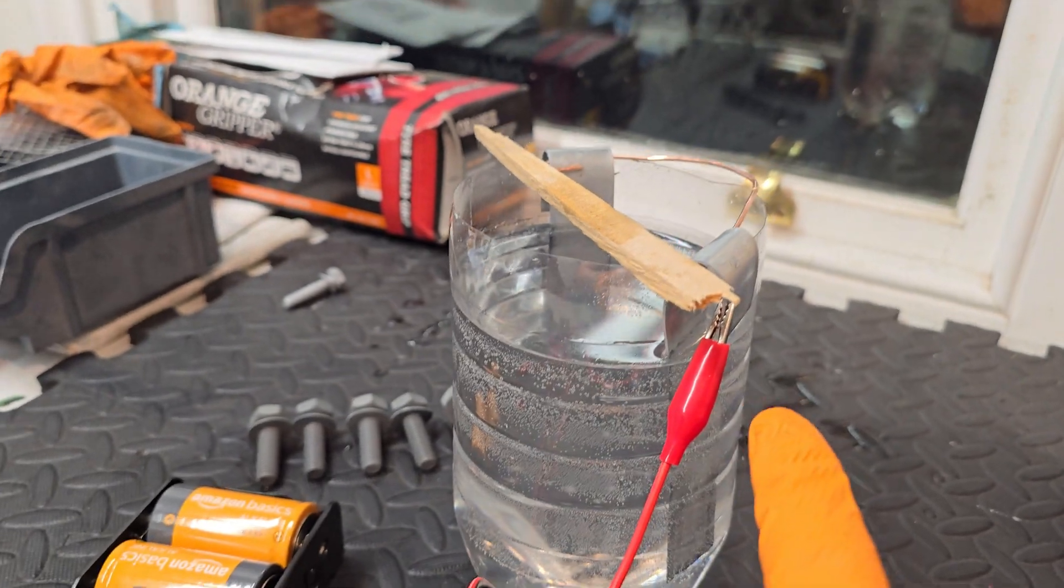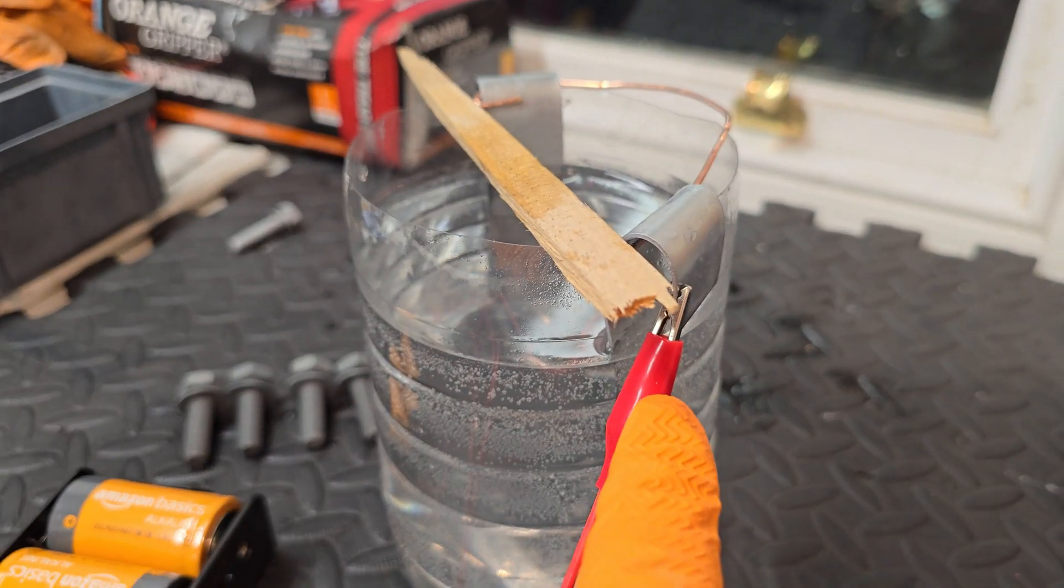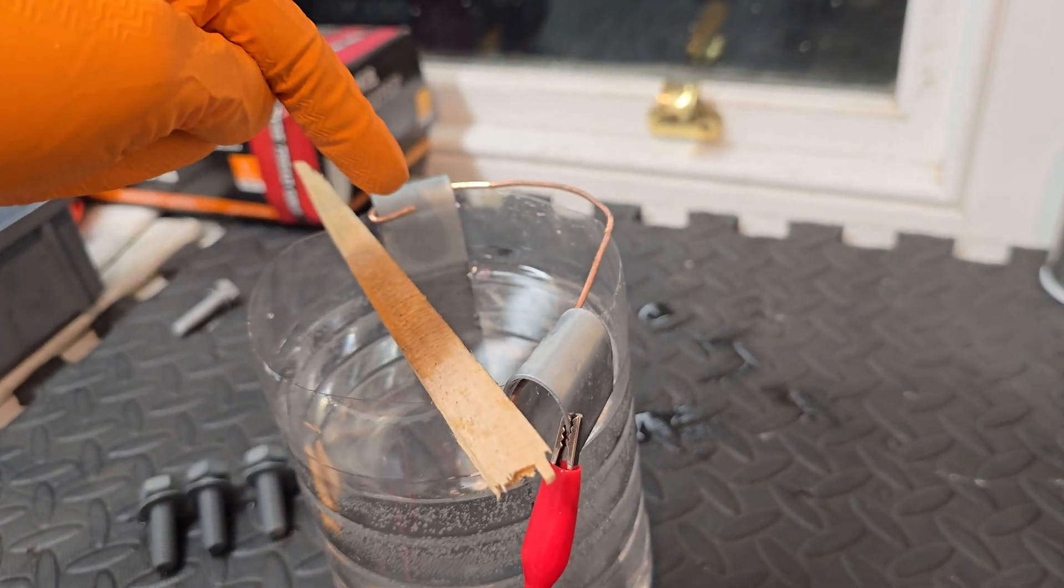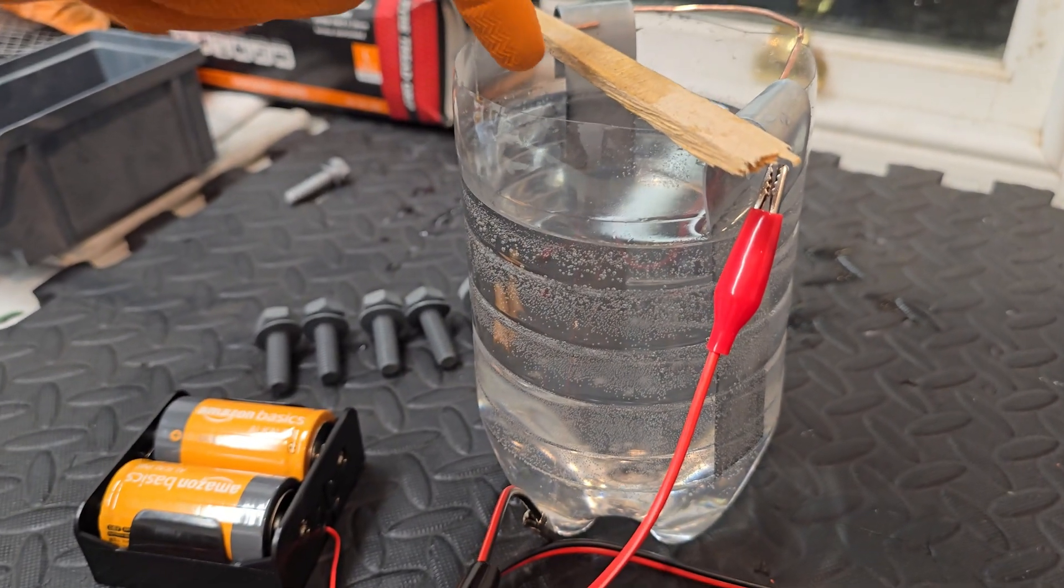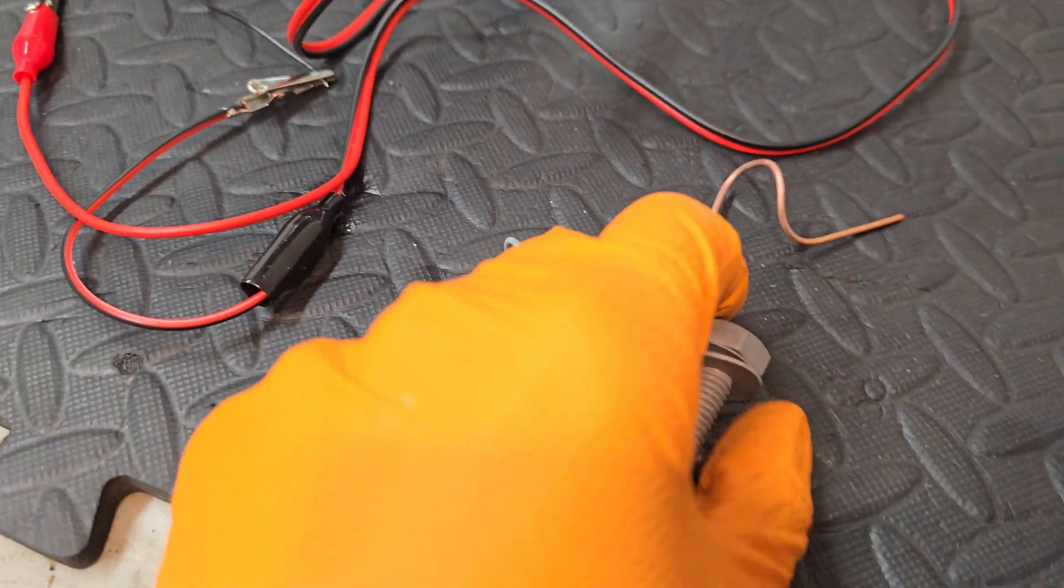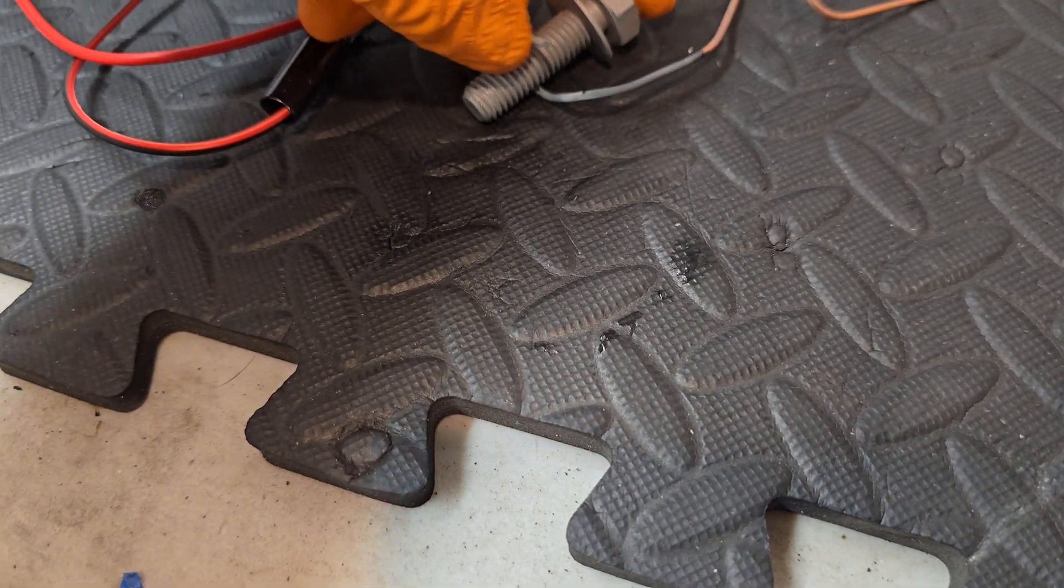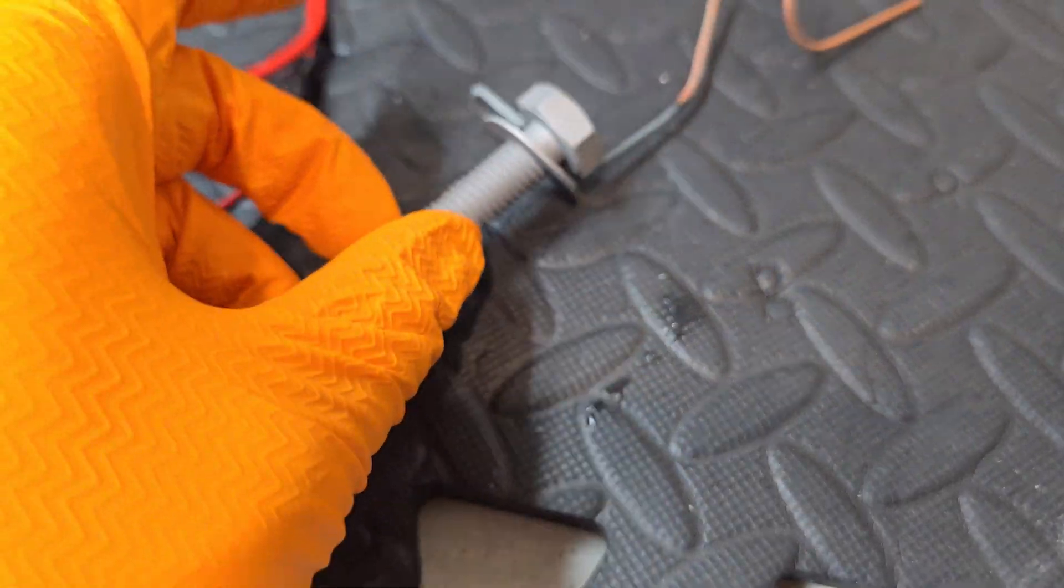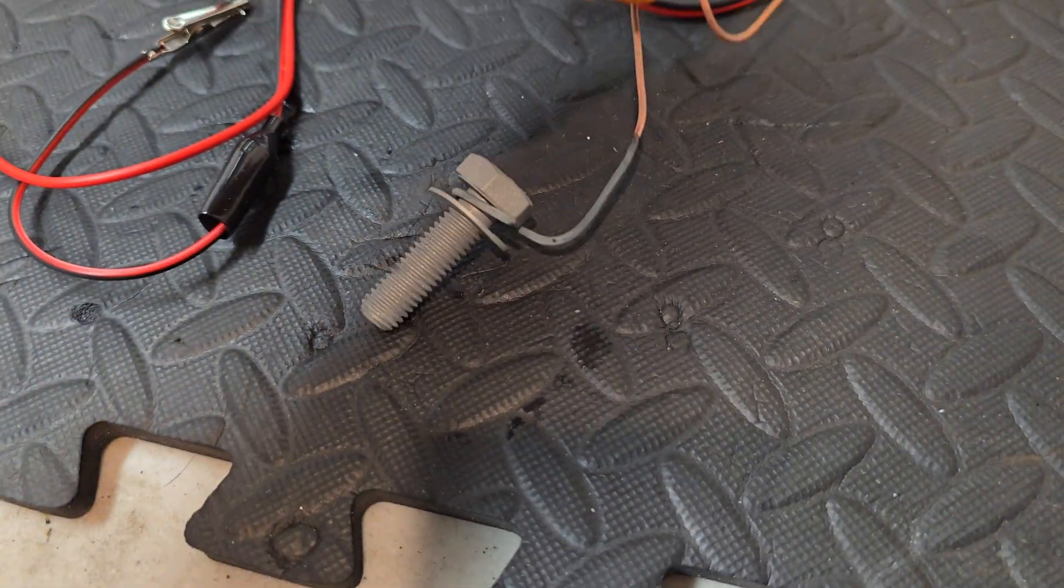Now we're changing the wiring ever so slightly. We're going to be keeping this positive cable on this anode and the circuit essentially ends here. And essentially the connection is going to be made with the actual solution itself to the bolt. This will become a bit more clear here in a few moments. I'm actually going to suspend it here in my wire. This is my copper wire.